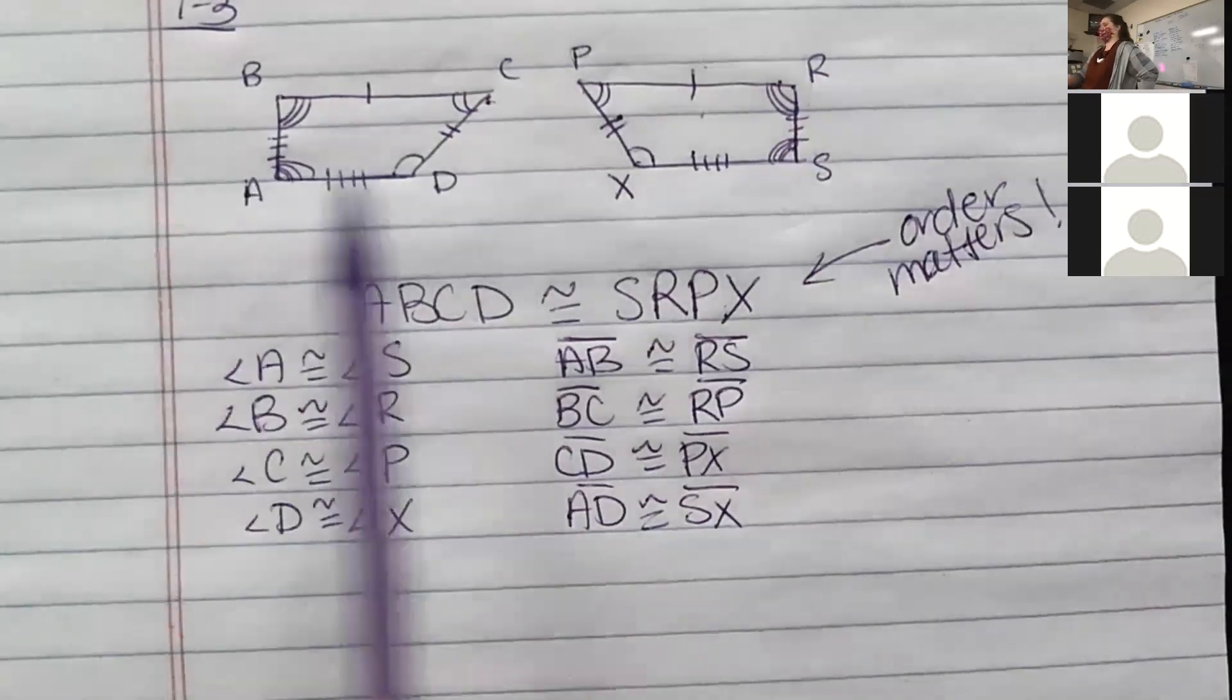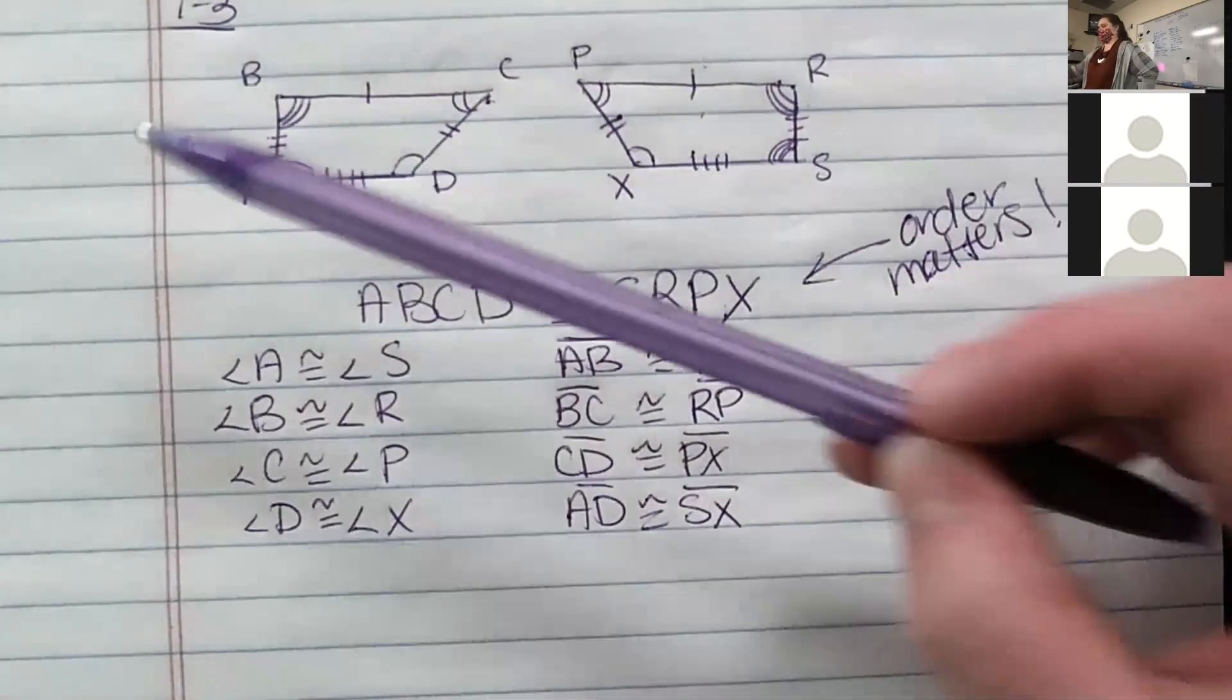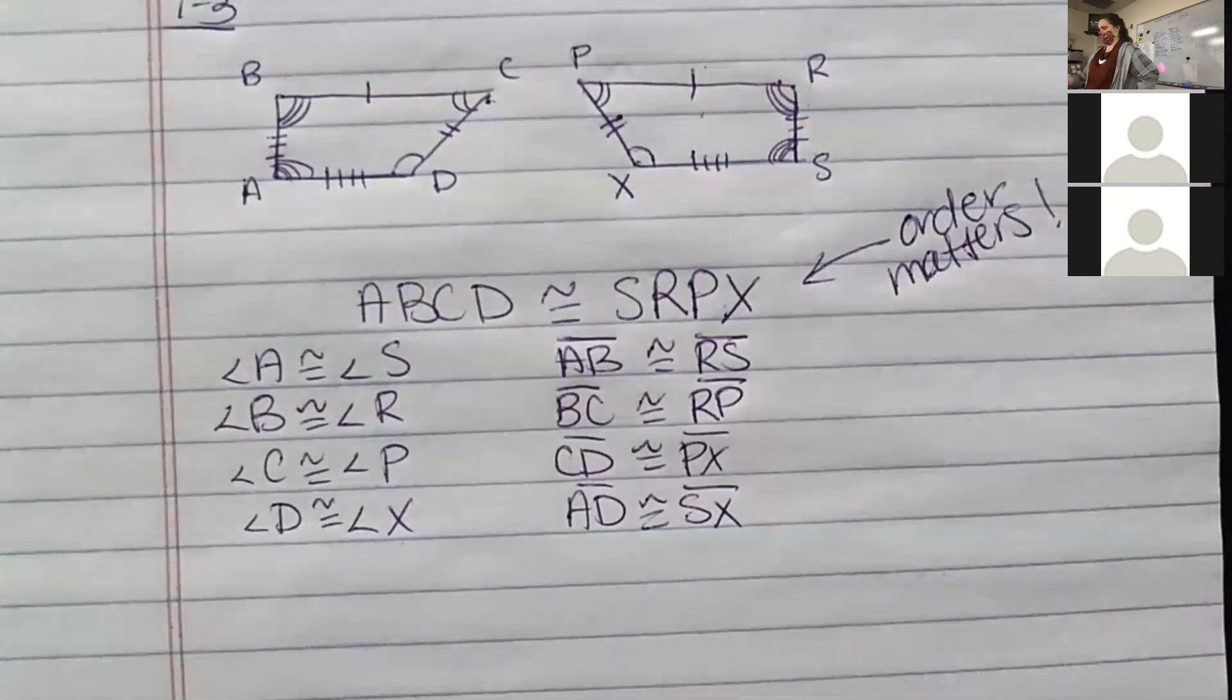In order for these figures to be completely congruent, the angles all had to be congruent and the sides had to be all congruent. That's why they have the little slashes to represent that they are congruent.